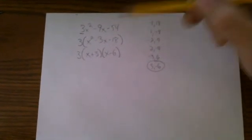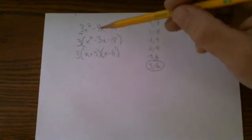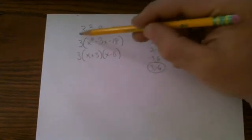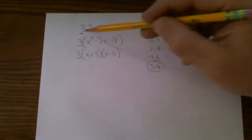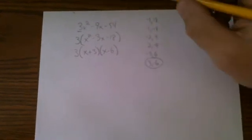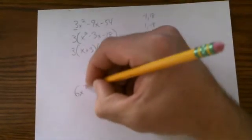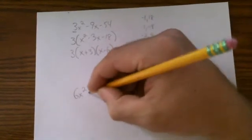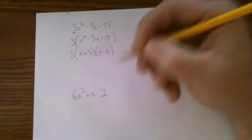Today's lesson is not combining factoring methods. It's what to do if this is not your common factor. Let's say we have something like 6x squared plus x minus 2.